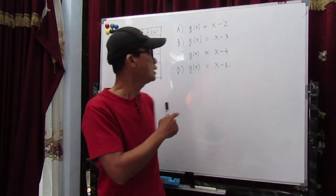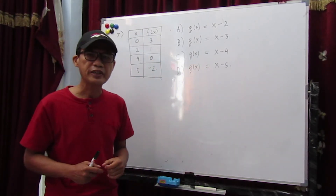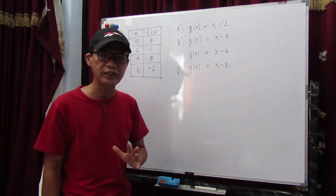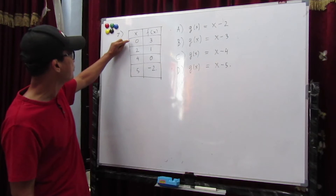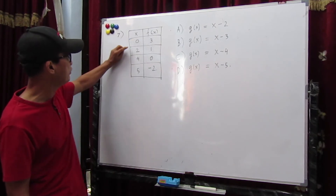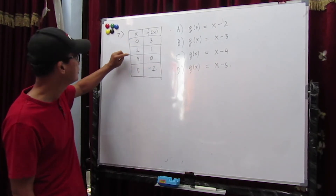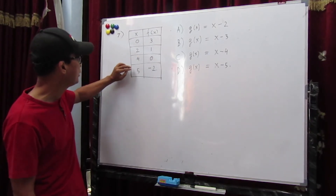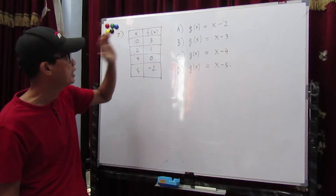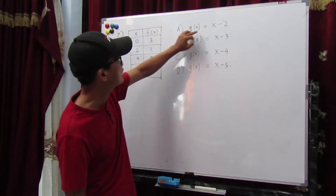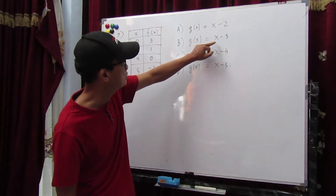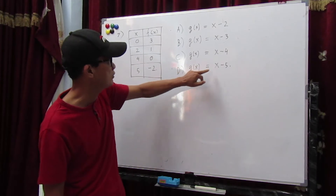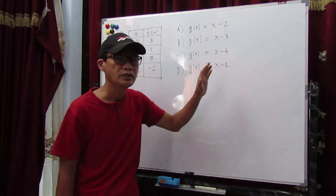Moving to number 7. F(x) is a polynomial and some values of x are shown here in a table: F(0) equal to 3, F(2) equal to 1, F(4) equal to 0, F(5) equal to minus 2. We have four options for G(x): G(x) equal to x minus 2, x minus 3, x minus 4, or x minus 5. Which one is a factor of F(x)?